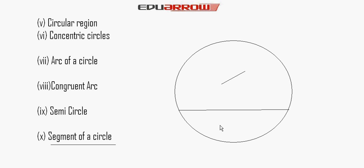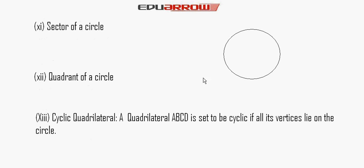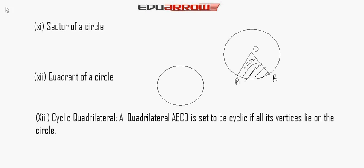Sector of a circle: The region between two radii and an arc is called a sector of a circle. Quadrant of a circle: A quadrant is a one-fourth part of a circle. Taking half of the circle and then half again gives us one-fourth part, which is called the quadrant of a circle.